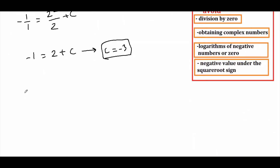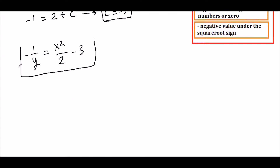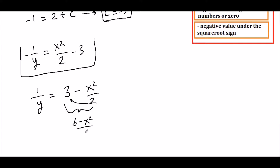Plugging c back in: negative 1/y equals x squared over 2 minus 3. Multiplying by negative 1 gives 1/y equals 3 minus x squared over 2. Merging into a single fraction: 1/y equals (6 minus x squared) over 2. Inverting gives y equals 2 over (6 minus x squared). This is our explicit solution.